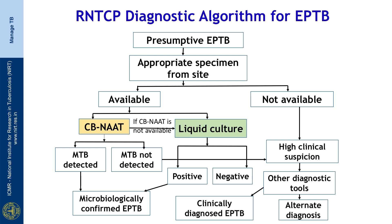Looking at the diagnostic algorithm for EPTB as per our national TB control program: first we suspect EPTB based on symptoms and signs, then try to obtain an appropriate specimen. If specimen is available, we subject it to GeneXpert; if GeneXpert is not available, we also subject it to liquid culture. If GeneXpert shows MTB detected or liquid culture is positive, we label the patient as microbiologically confirmed EPTB. If GeneXpert shows MTB not detected, liquid culture is negative, but there is high clinical suspicion, we subject the patient to other diagnostic tests, which may indicate tuberculosis or provide an alternative diagnosis.